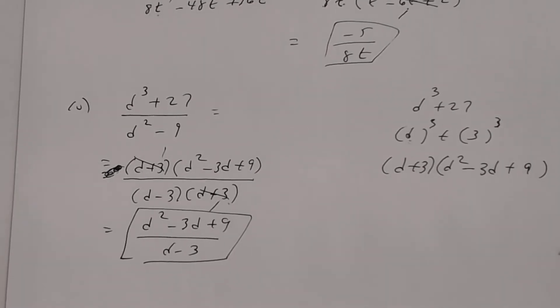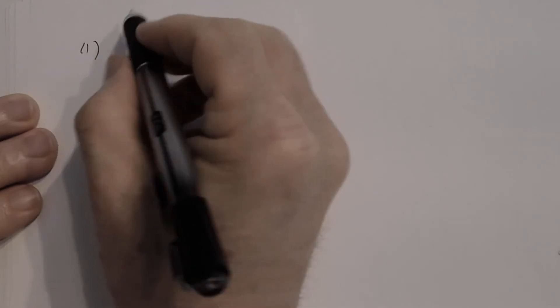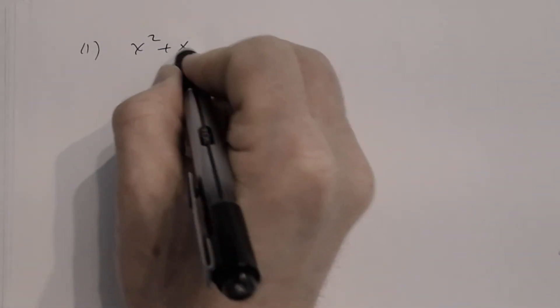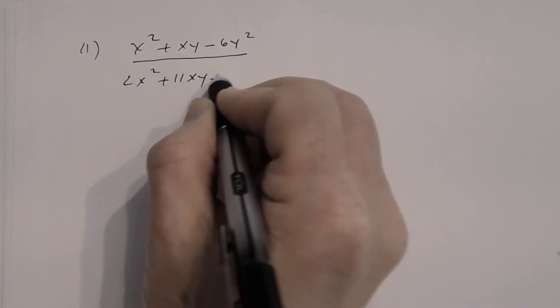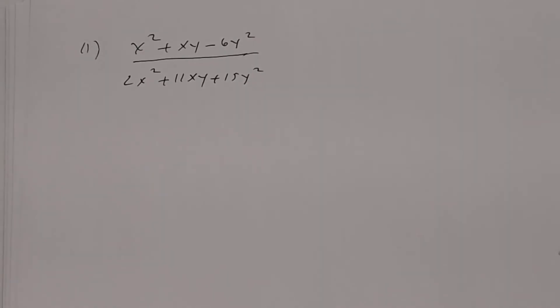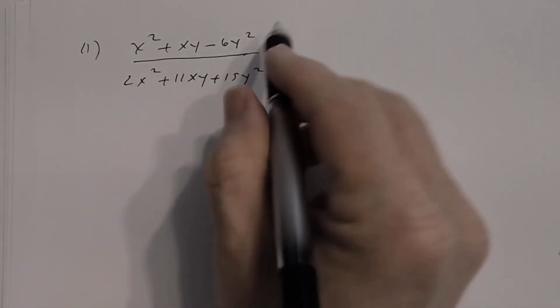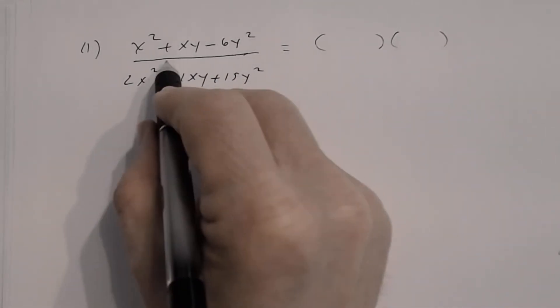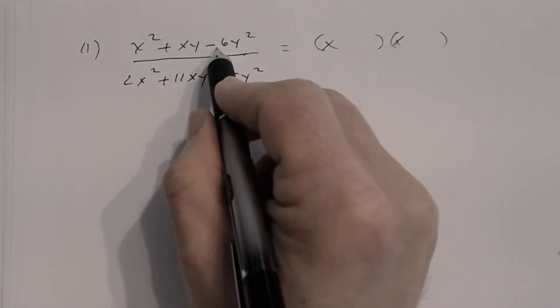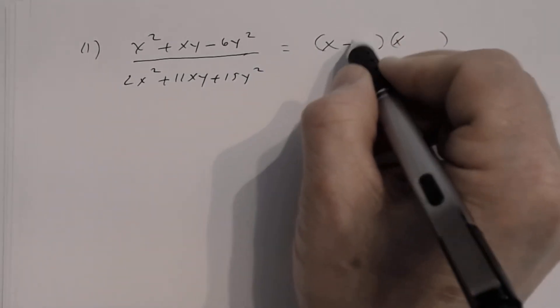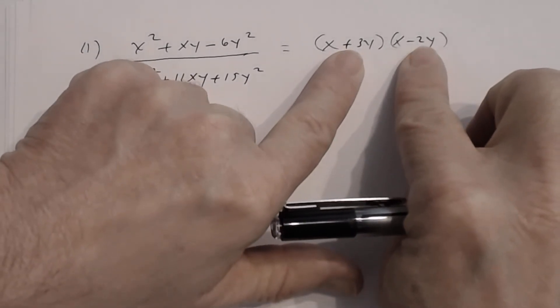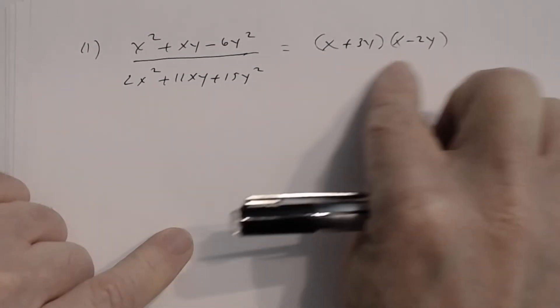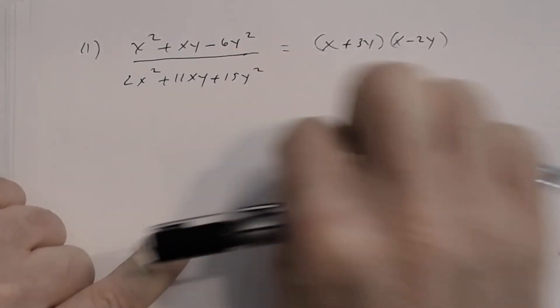Number eleven: (x² + xy − 6y²) divided by (2x² + 11xy + 15y²). Two variables, so be careful. Factor the numerator: x·x, last sign is negative so signs are different; try 3y and −2y. Double-check: x² − 6y², outer −2xy + inner 3xy = xy. ✓ Numerator: (x + 3y)(x − 2y).